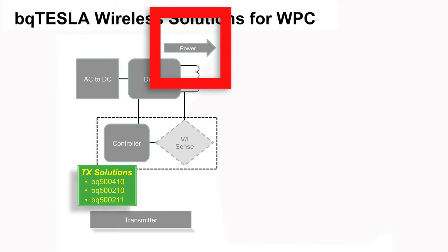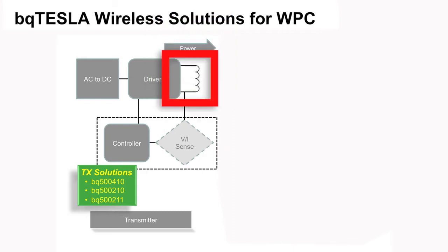The direction of the power transfer is always from the power transmitter to the power receiver. The key circuits of power transmitter are the primary coil used to transfer power to the power receiver coil.